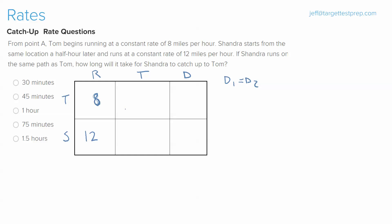Now here's the interesting thing, and this is where most students struggle—it's with the time in these questions. It's saying that Tom begins running and then Sandra starts running a half an hour later, meaning she's leaving later.